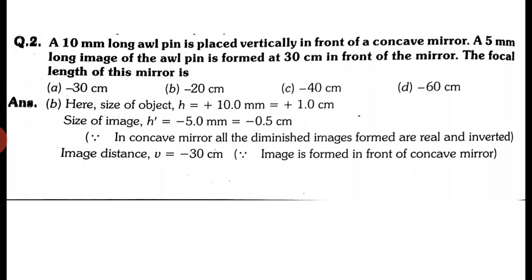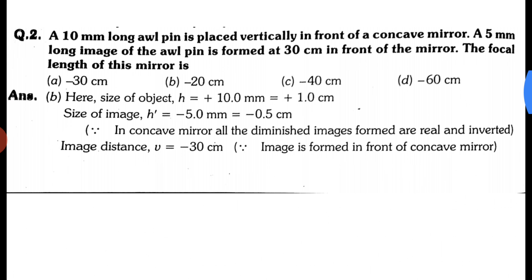A 10 mm long all-pin is placed vertically in front of a concave mirror. Reading line by line: the pin is 10 mm long, which means height is given. So height of object h equals plus 10 mm, because the object is always upright, so height is positive.